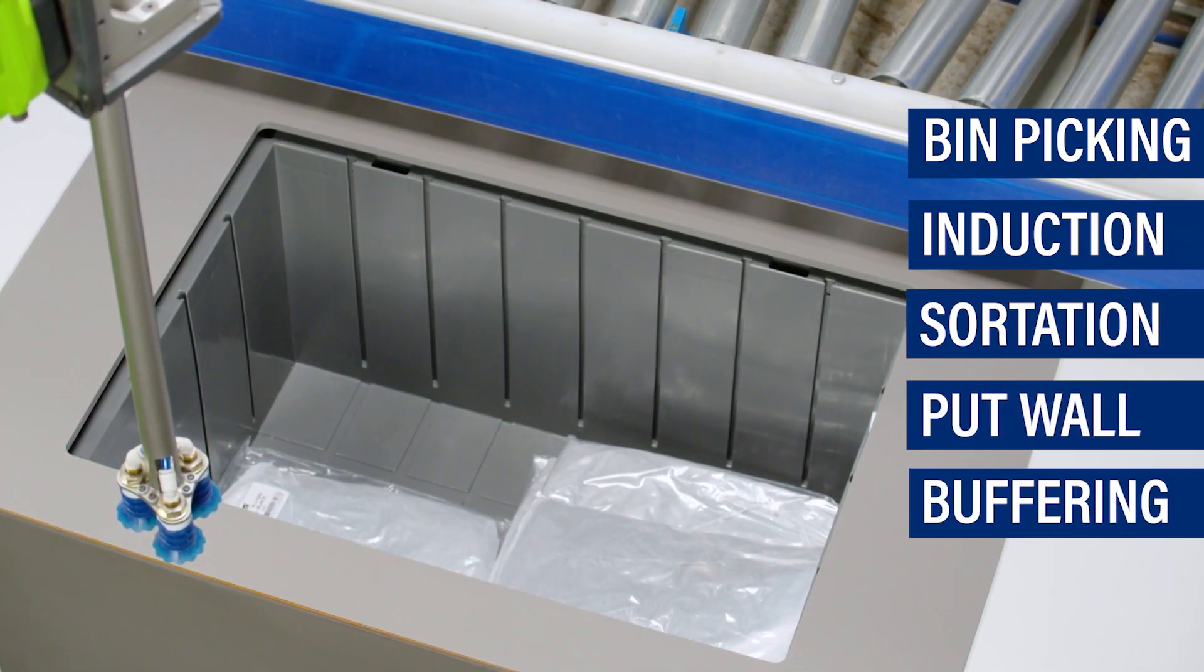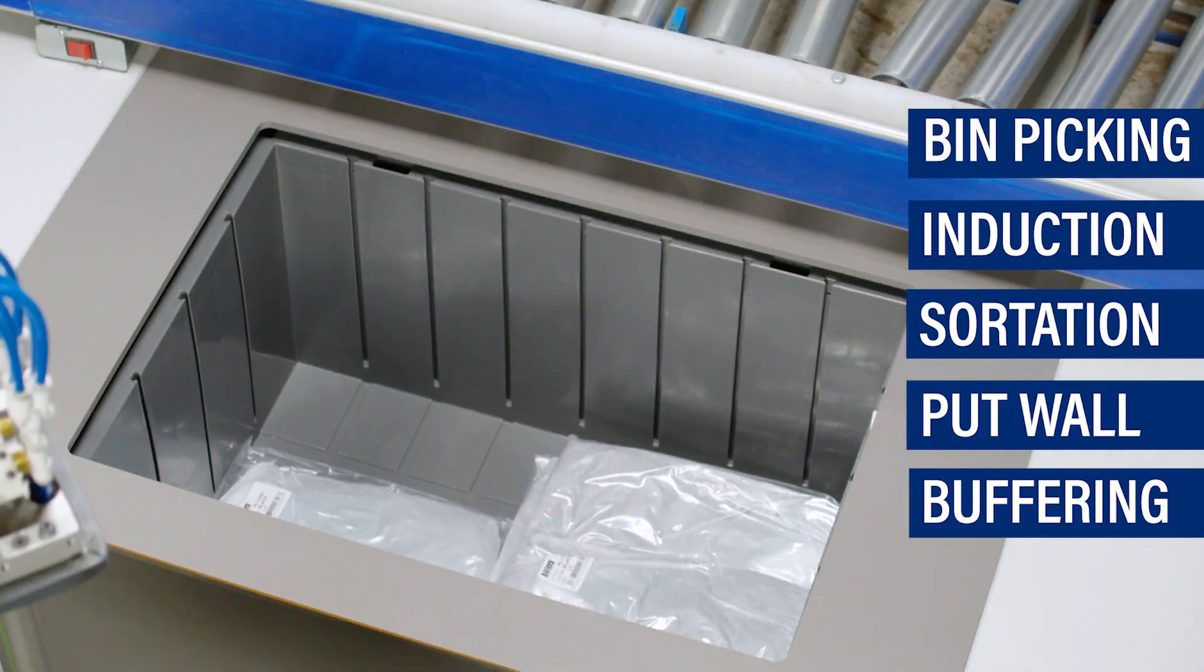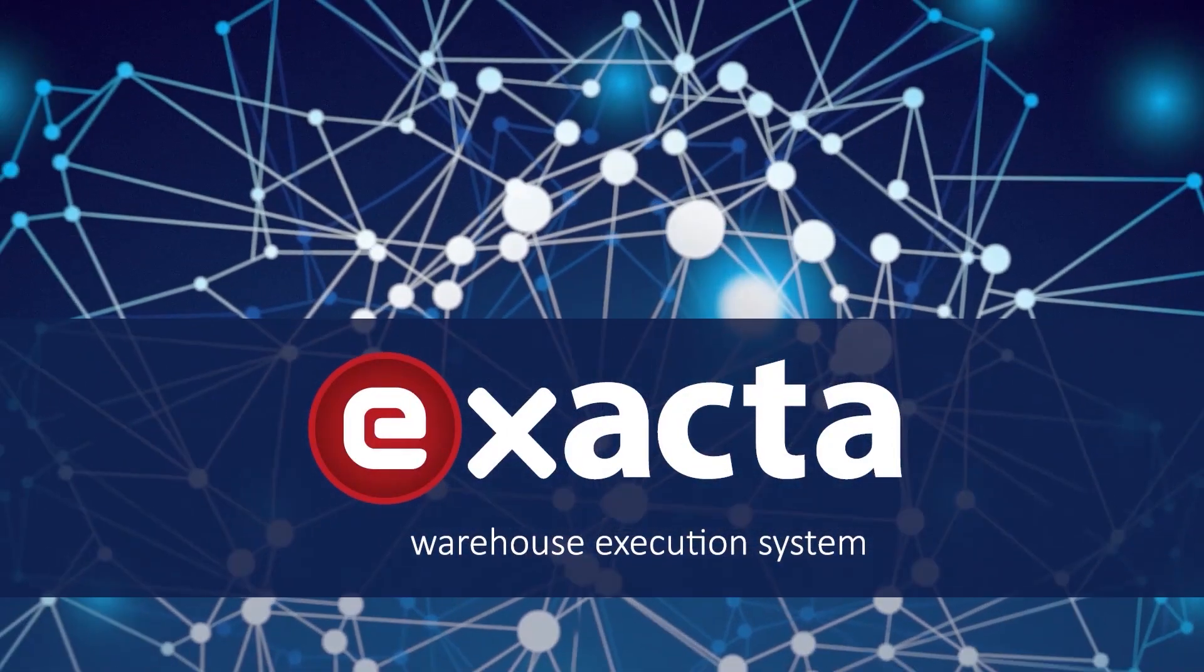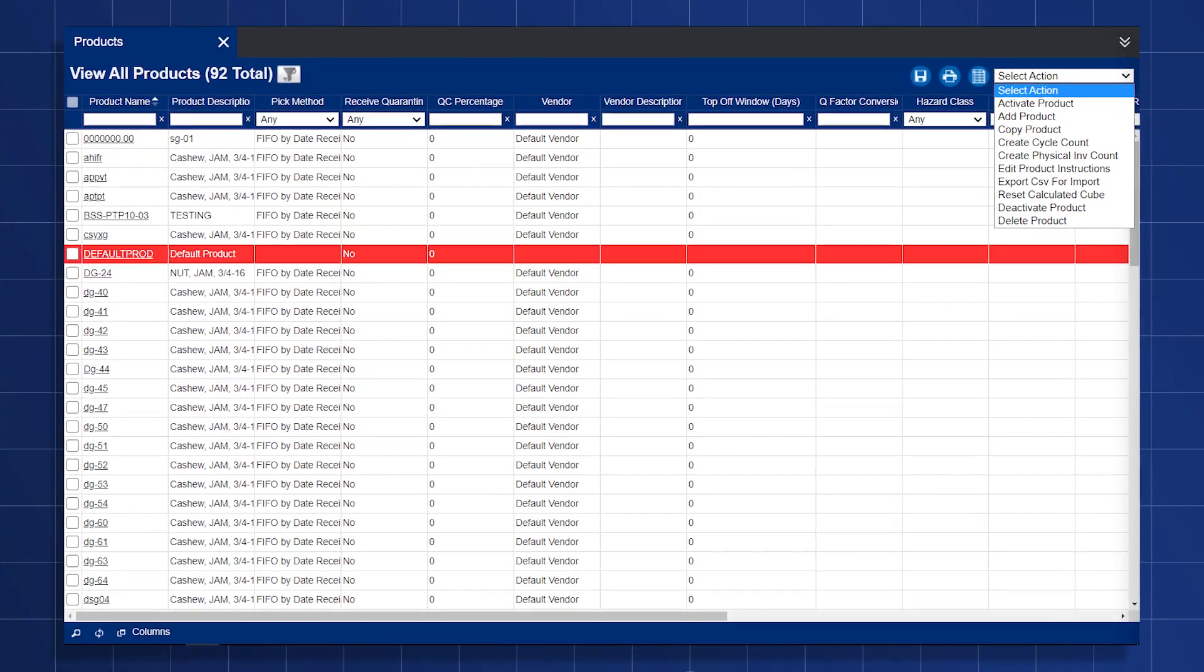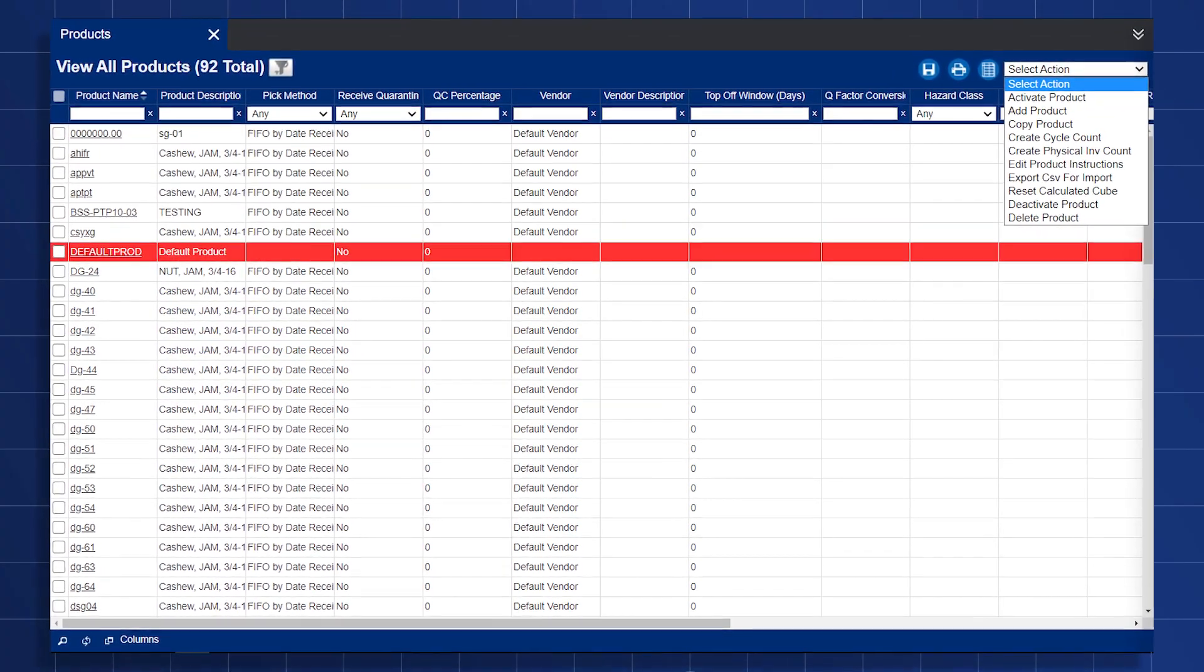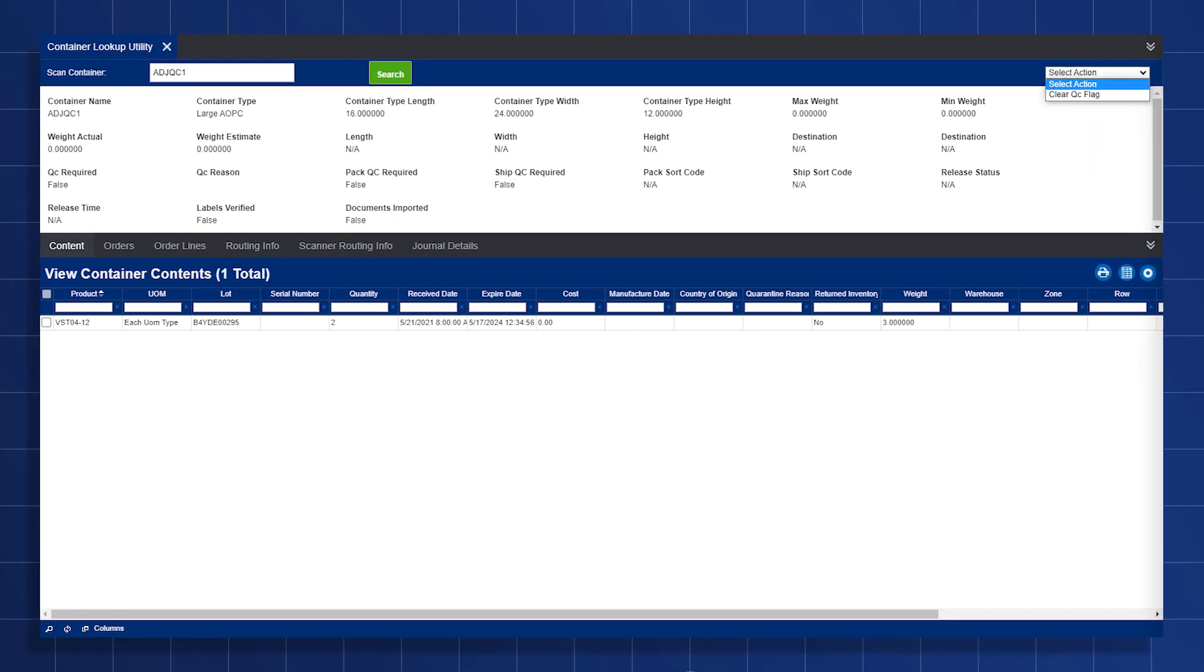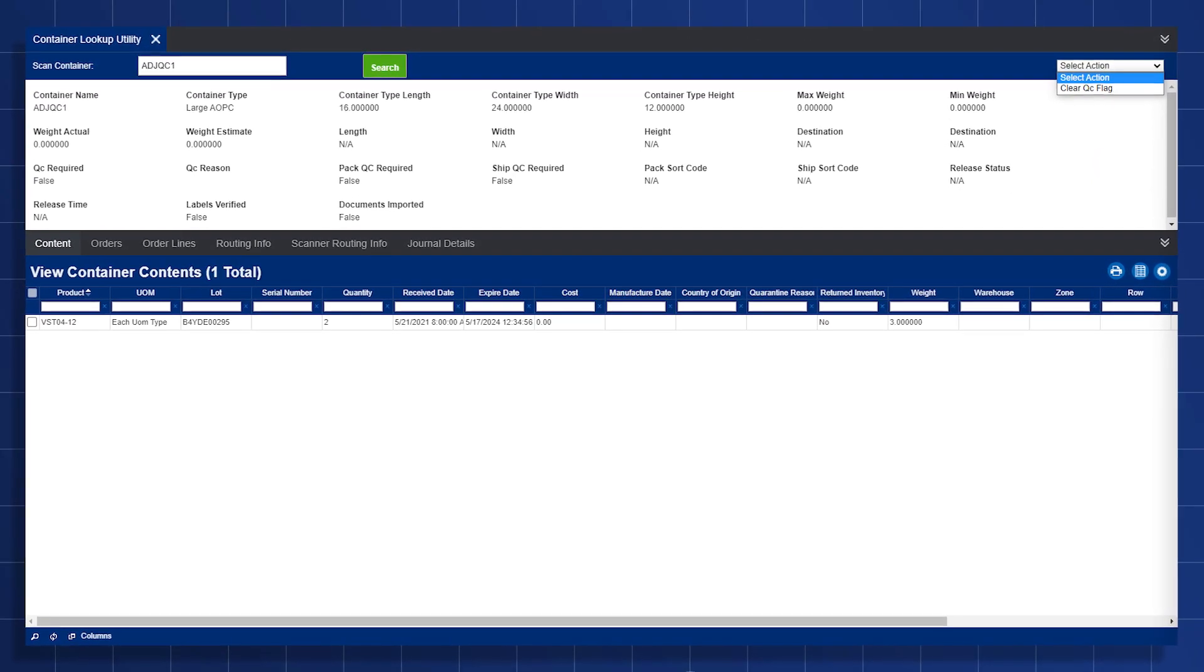The AI directly interfaces with Bastion Solutions' exacted WES software, communicating new product data and sharing order fulfillment information. This integration allows the cells to run with even higher autonomy, enabling 24-7 lights-out operations.